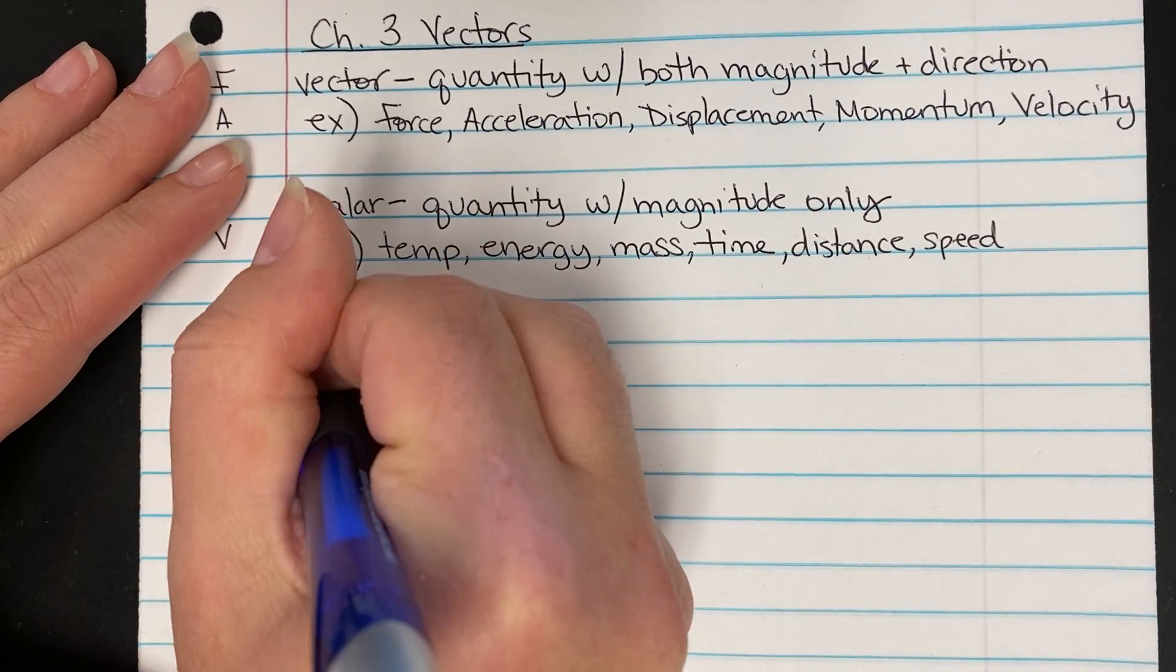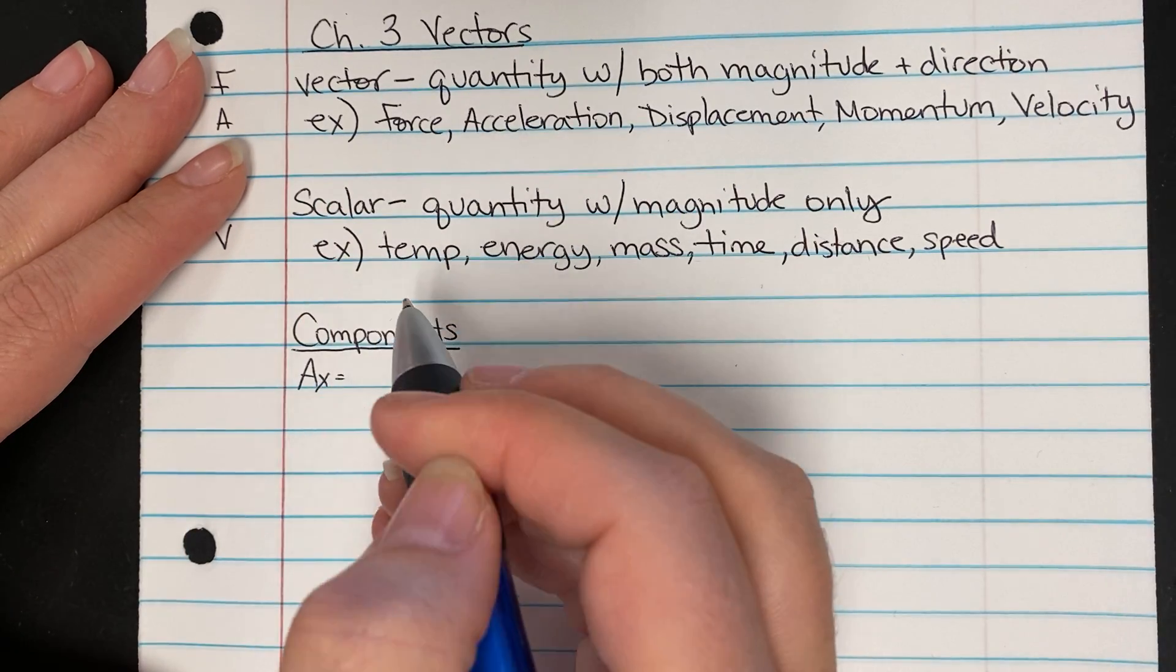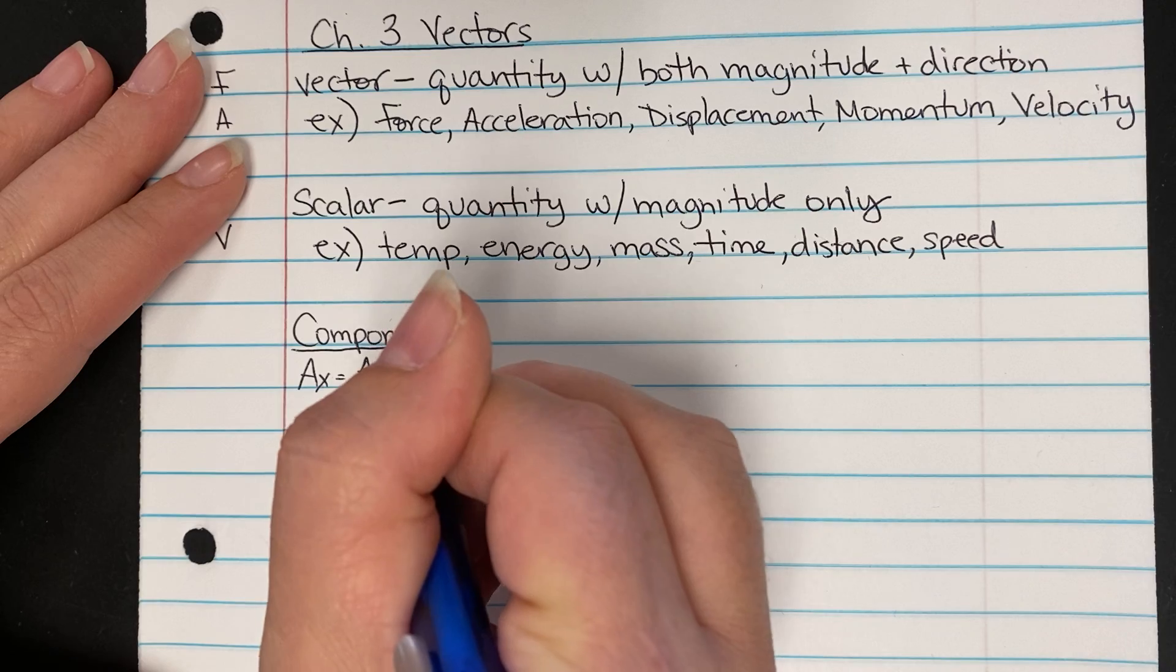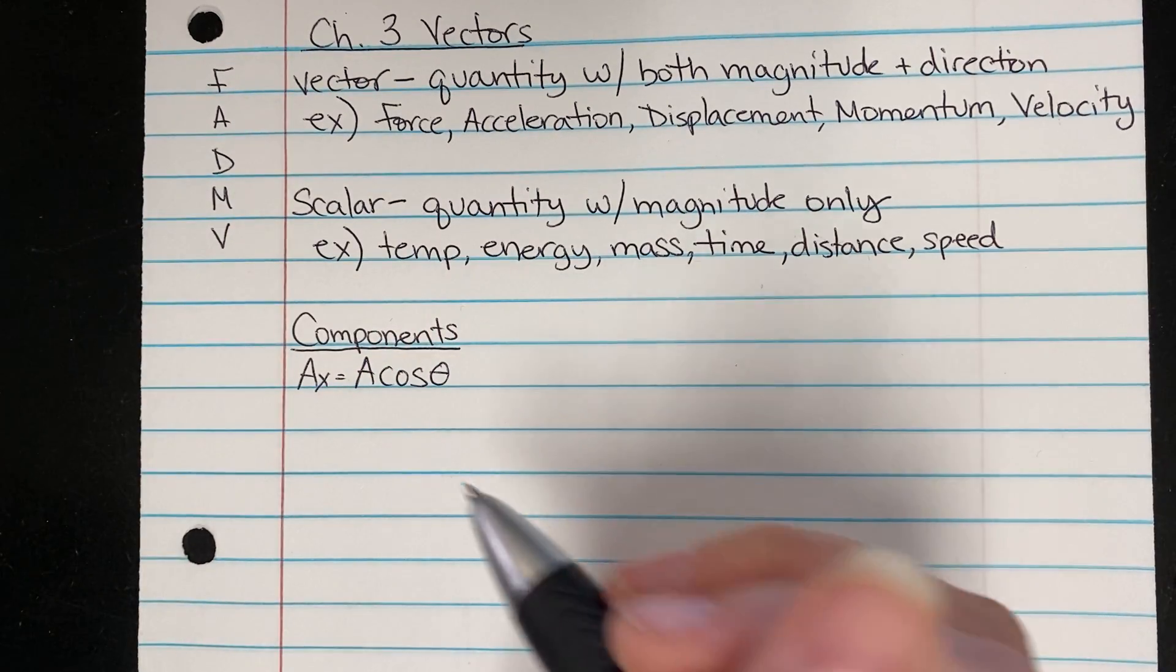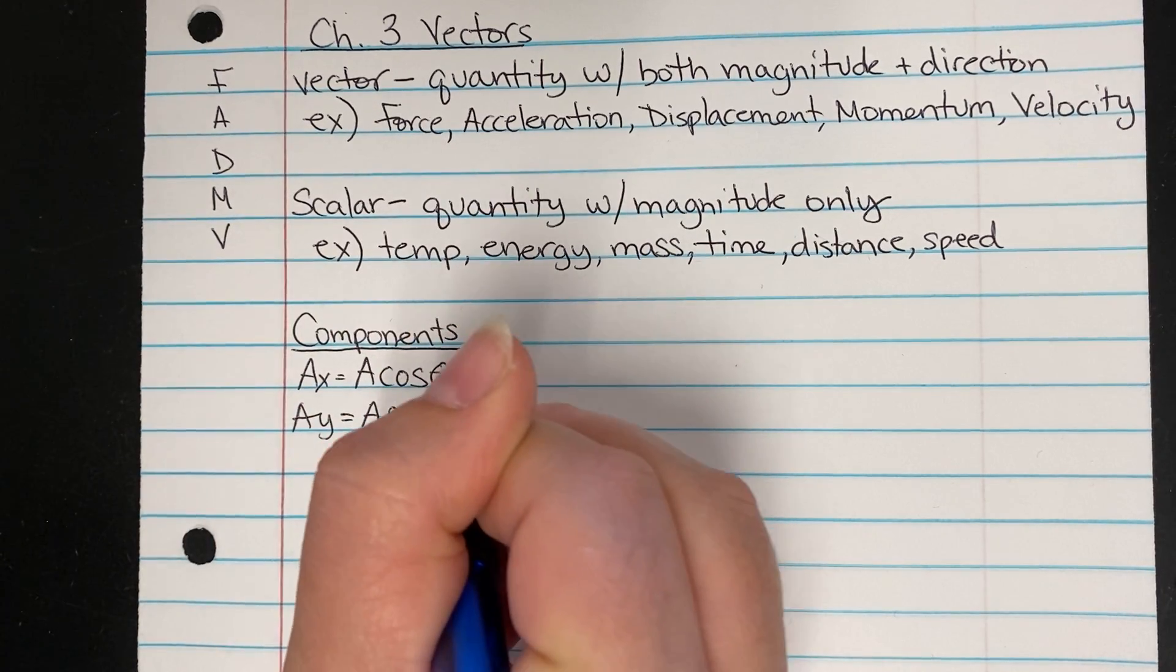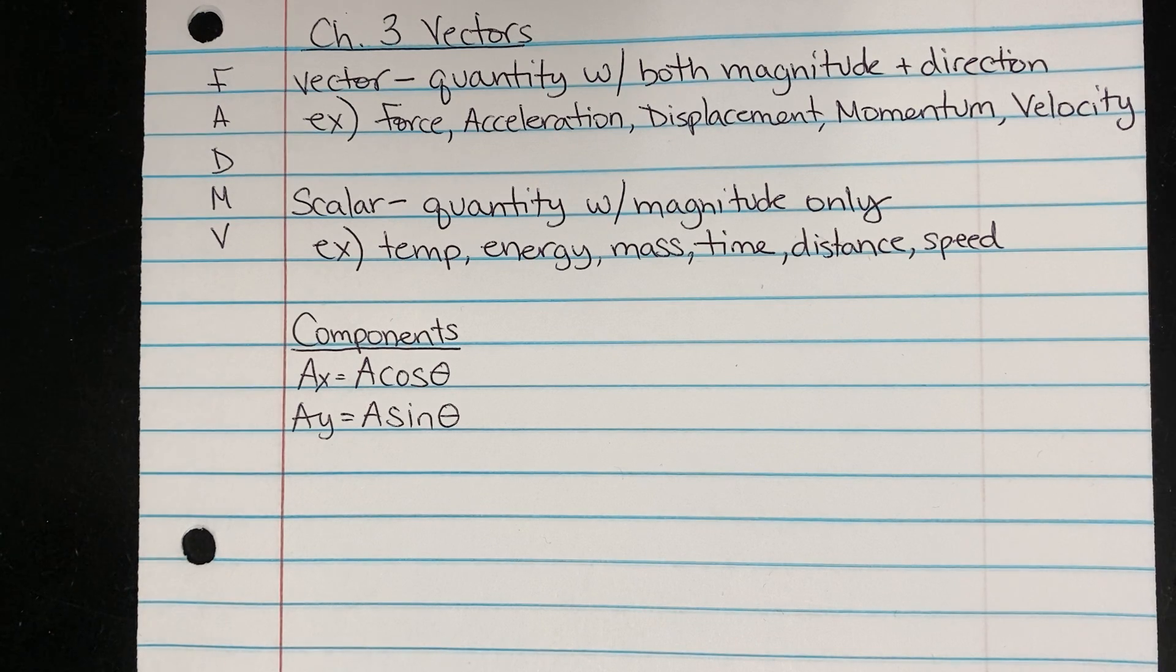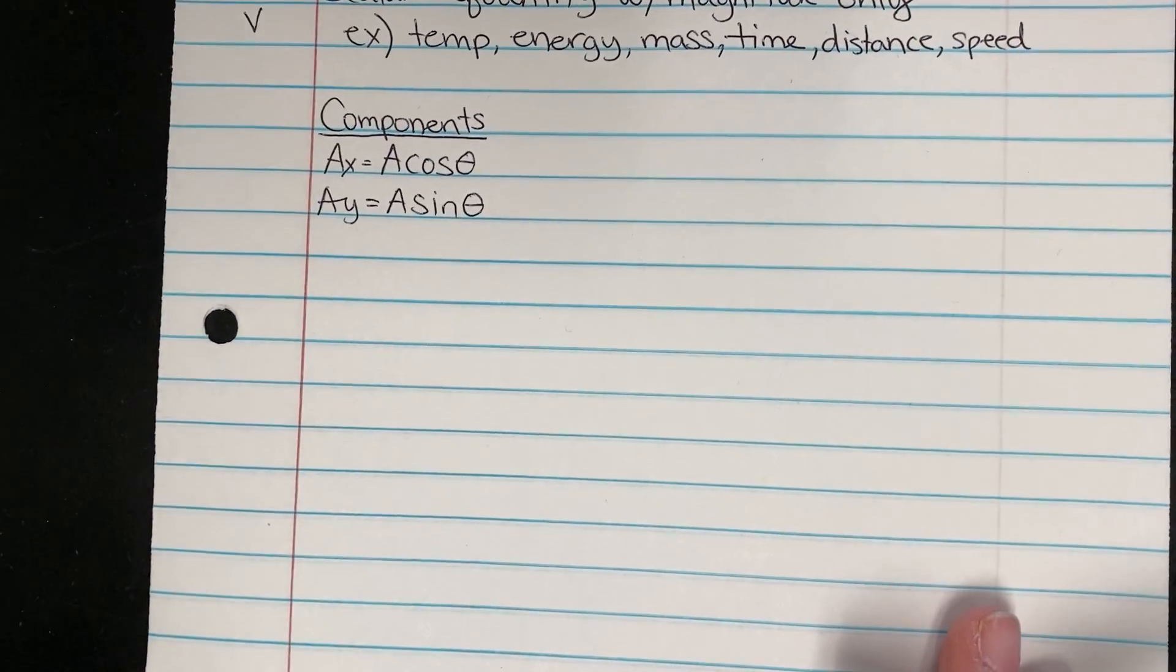These are called components and we can find vector components by using the following equations. To find the X component of any vector, you use the formula A cosine of theta. And to find the Y component of any vector, we use A sine of theta. So what does this look like?